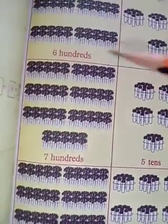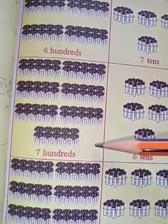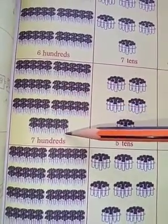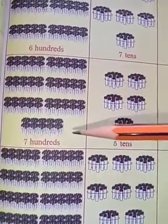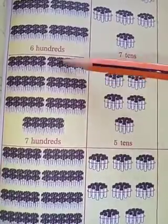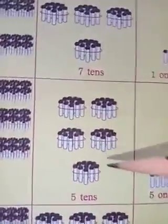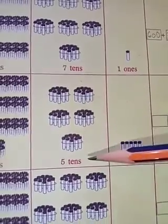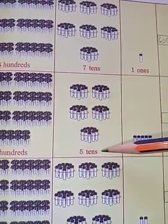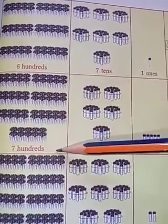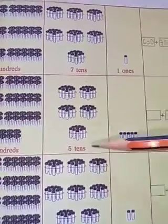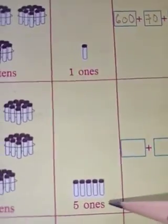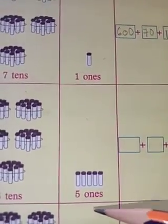Next one. How many hundreds are having children? One, two, three, four, five, six, seven — seven hundreds. How many tens are there? One, two, three, four, five — five tens. How many ones are having here? Five ones.